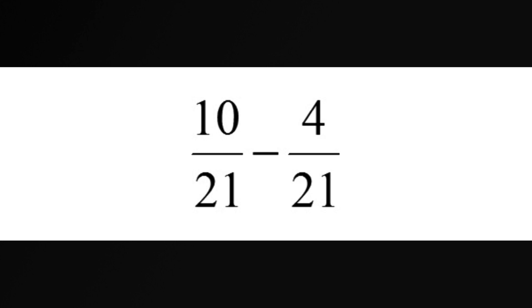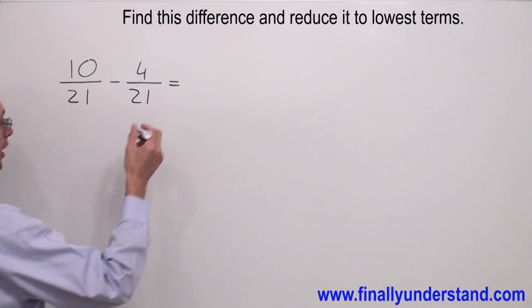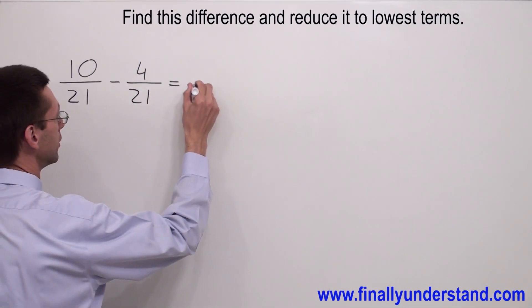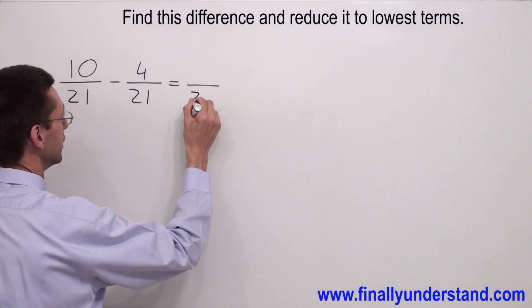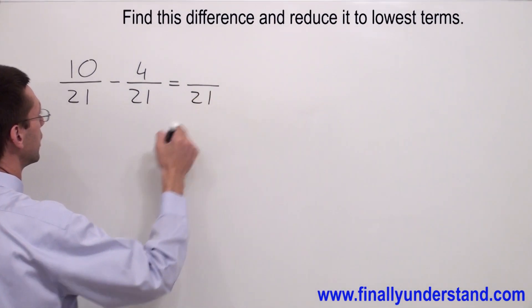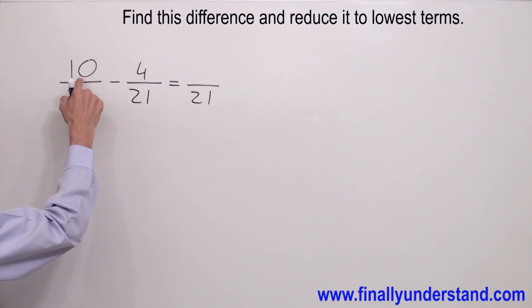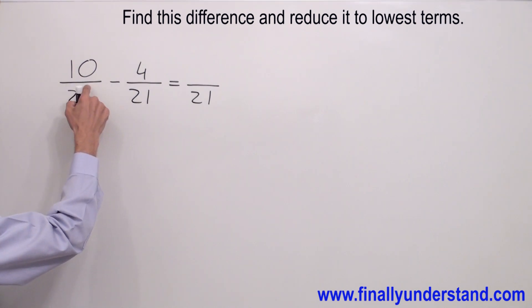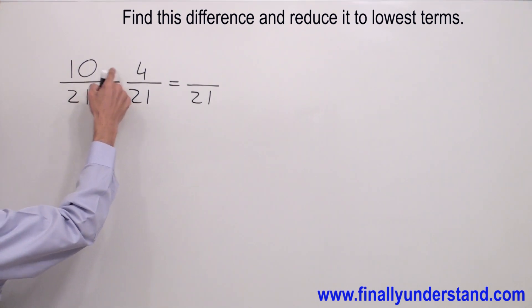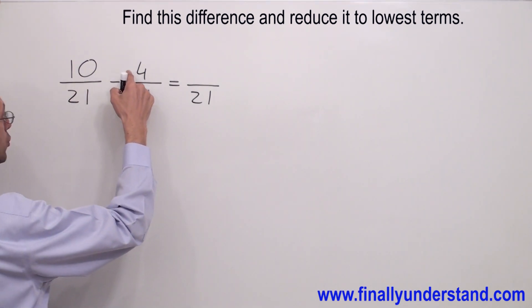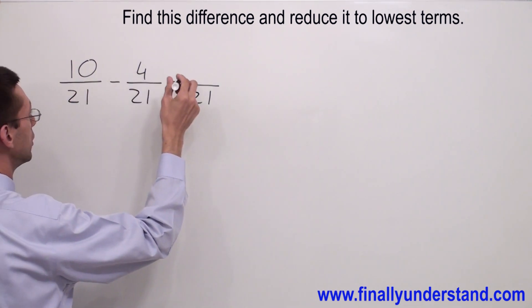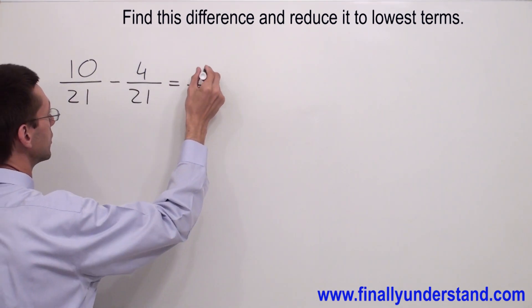Let's take a look at this example. We have the same denominator, so I'm going to copy down the denominator and subtract the numerators. 10 minus 4 is 6.